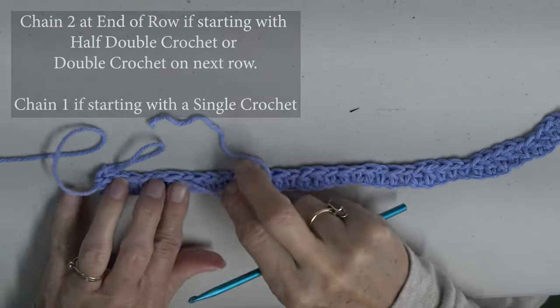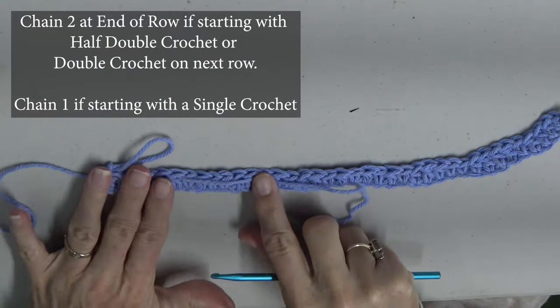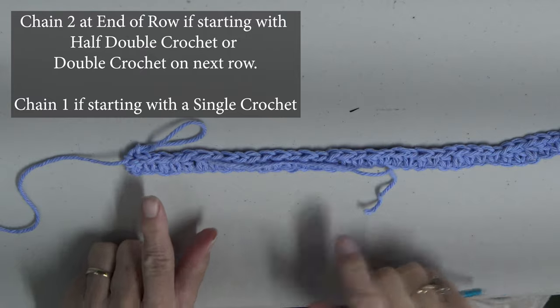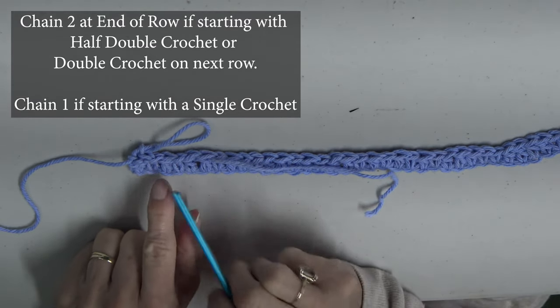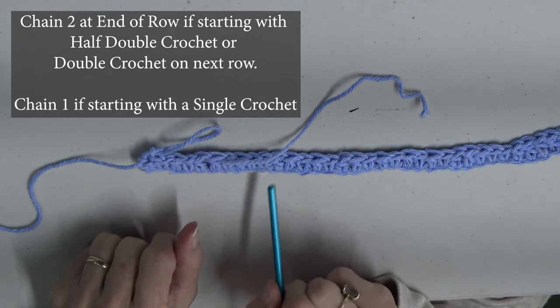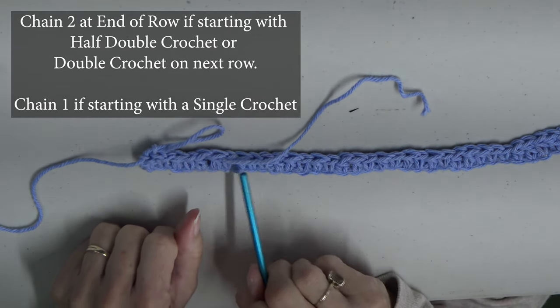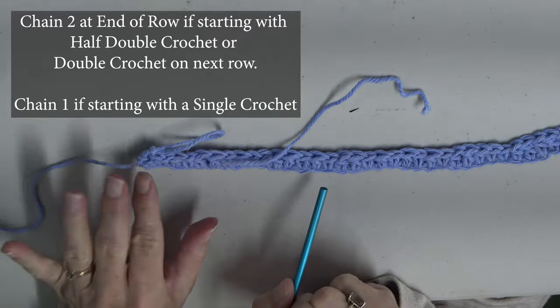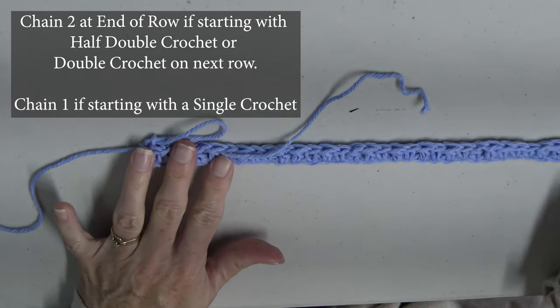And so when you do each row from here on out, if you're going to do a double crochet or a half double crochet, we start every row with two chains. If you're going to start with a single crochet, you are going to start with one chain at the beginning of the row.